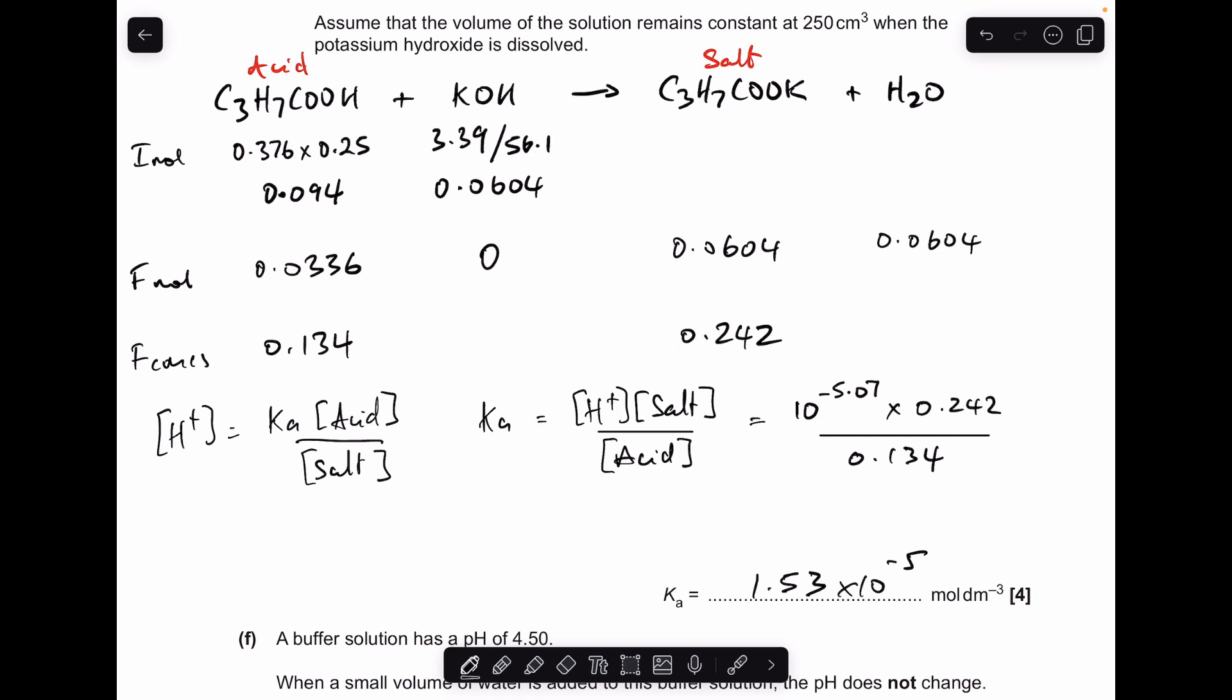So when you use non-rounded numbers, keep everything in your calculator till the very very end and you should get Ka coming out at 1.53 times 10 to the minus 5.